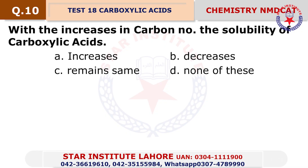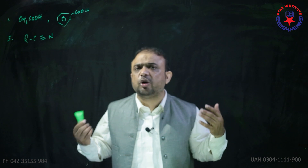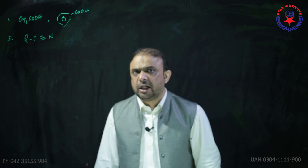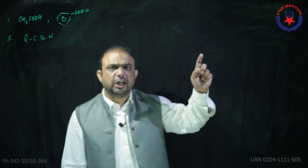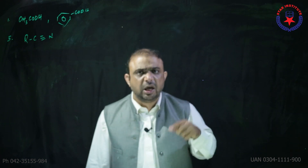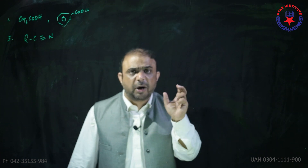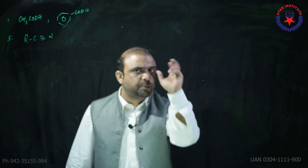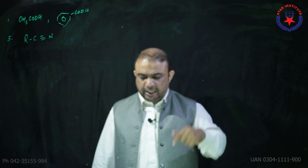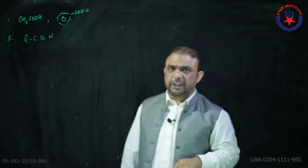Question number 10: With increase in carbon number, the solubility of a carboxylic acid — remember, when nothing is specified, we talk about solubility in water. As the carbon number increases, the organic part increases, so the solubility decreases. The choice is beta.